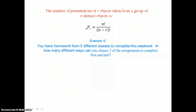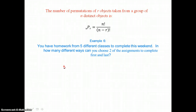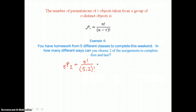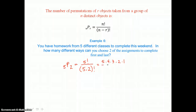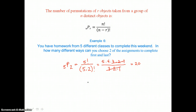The number of permutations of r objects taken from a group of n distinct objects is n permutate r, which equals n factorial over n minus r factorial. In example six, you have homework from five different classes. In how many different ways can you choose two of the assignments to complete first and last? Here we want to choose two from five, so we have five permutate two, which equals five factorial over five minus two factorial. Expanding and canceling like factors, we are left with five times four or twenty. There are twenty different ways.